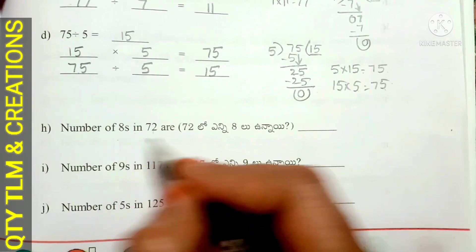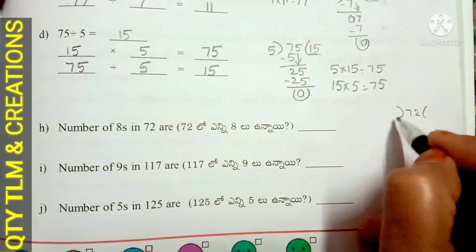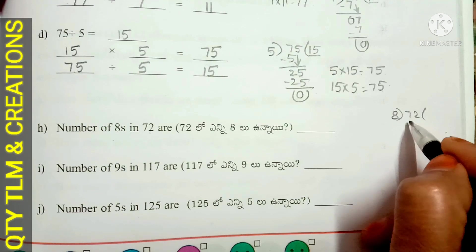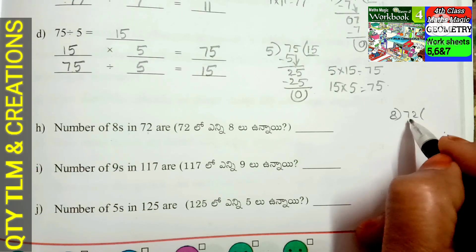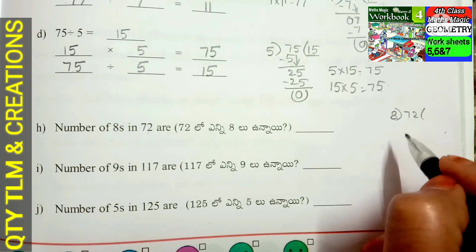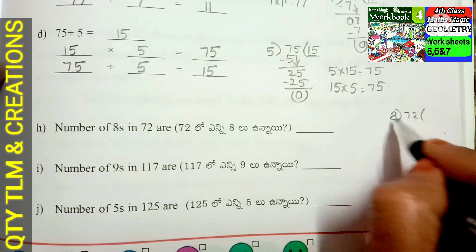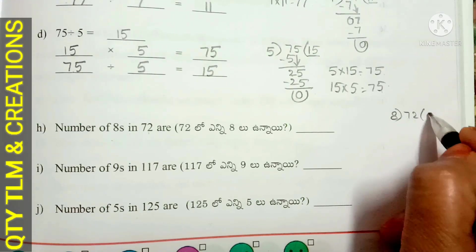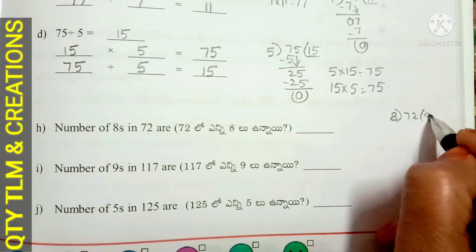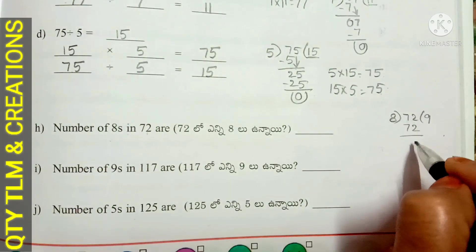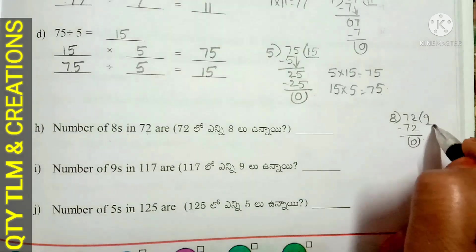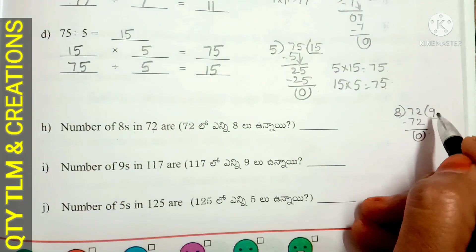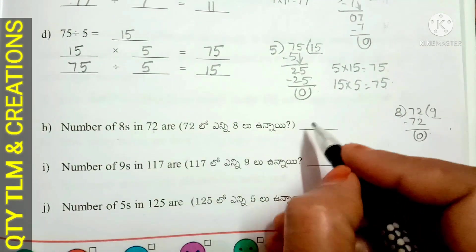Next, E. 72 divided by 8. We start with the 10s place. But 7 is less than 8, so we take 7 and 2 together: 72. 8 divides 72 for 9 times. 8 nines are 72. Remainder is 0, quotient is 9. That means there are 9 eights in 72.